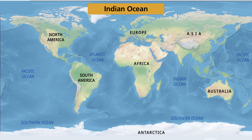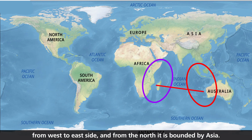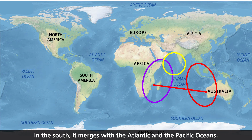Indian Ocean: It extends from Africa to Australia, from west to east, and from the north it is bounded by Asia. In the south, it merges with the Atlantic and the Pacific Oceans.